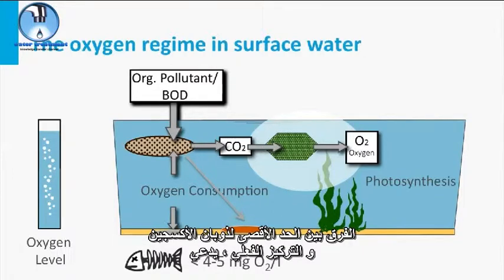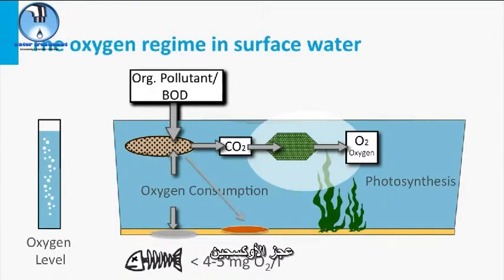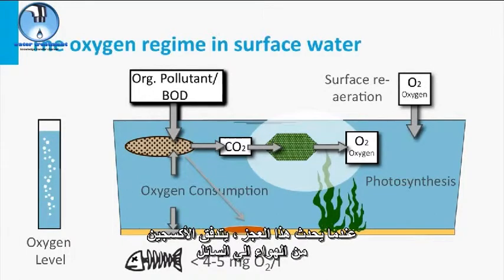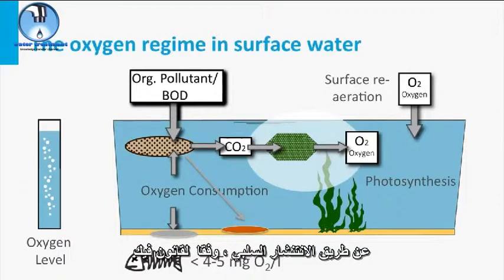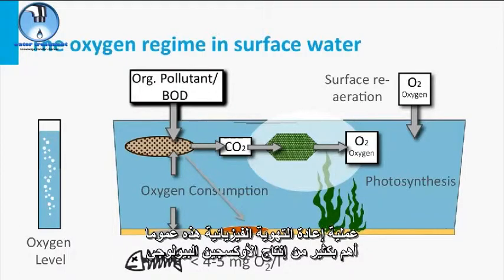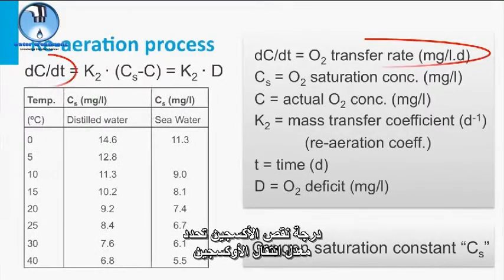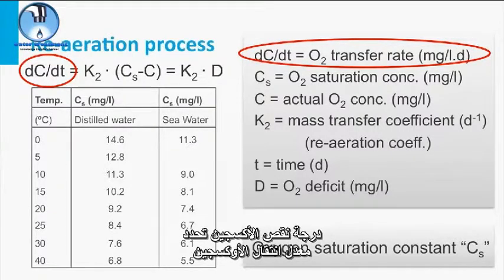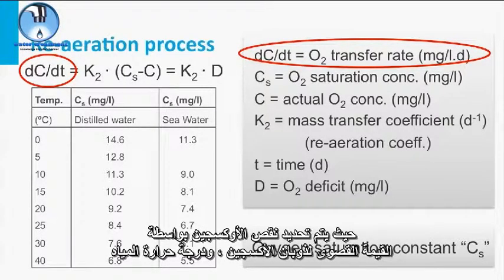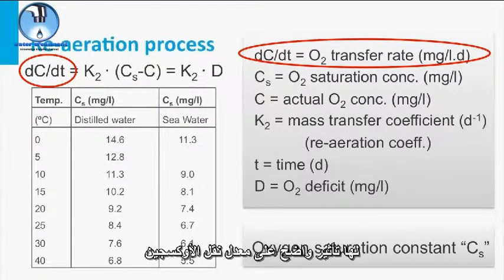The difference between the maximum oxygen solubility and the actual concentration is called the oxygen deficit. When such a deficit occurs, a net flux of oxygen from the air to the liquid will start via passive diffusion following Fick's law. This physical reaeration process is generally much more important than biological oxygen production. The degree of oxygen deficiency determines the oxygen transfer rate. Since oxygen deficiency is determined by the maximum oxygen solubility, the water temperature has a distinct impact on the oxygen transfer rate.